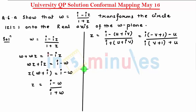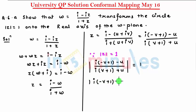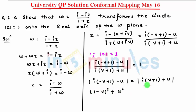Since |z| = 1, we can write |i(1 - v - u)| / |i(1 + v + u)| = 1, which means |i(1 - v - u)| = |i(1 + v + u)|. Finding the modulus, this gives √((1 - v)² + u²) = √((v + 1)² + u²). Squaring both sides: (1 - v)² + u² = (v + 1)² + u².